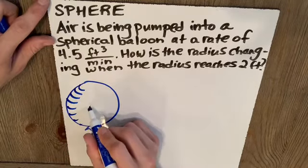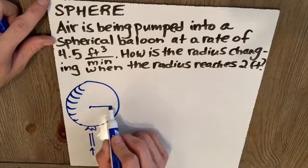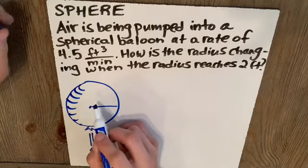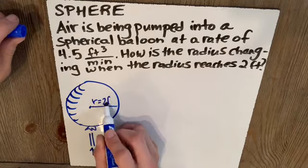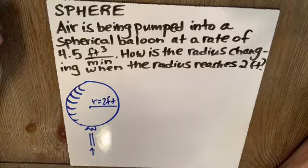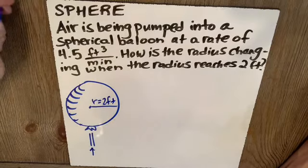And right at the center of the balloon, we've got a radius that goes out. And we want to know when the radius reaches two feet, how is the radius changing?